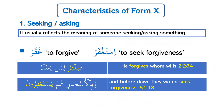The main characteristic of Form 10 is seeking or asking. It usually reflects the meaning of someone seeking or asking for something. For example, Form 1 is ghafara, meaning to forgive. Form 10 istaghfara means to seek forgiveness or ask for forgiveness. The Quranic verse وبالأسحار هم يستغفرون means 'before dawn they would seek forgiveness,' showing the meaning of seeking.